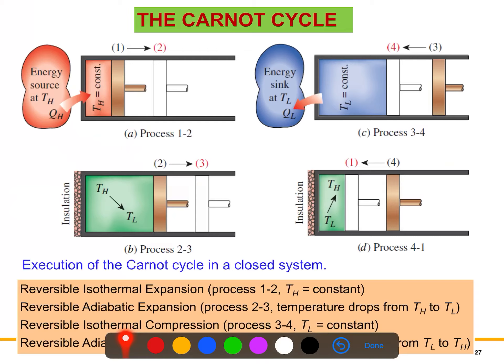We have four reversible processes. Process one is the reversible isothermal expansion state. Here we have gas inside the cylinder with a piston. The gas is at a constant temperature TH, and we place a high-temperature reservoir, or energy source, in very close contact with this piston-cylinder device. Both the energy source and the gas temperature TH are constant — they are the same.